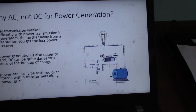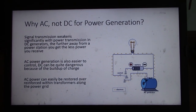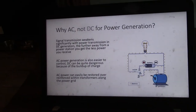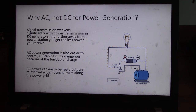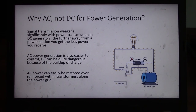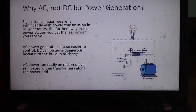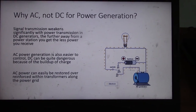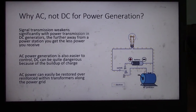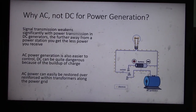Why do we use alternating current for power generation? Signal transmission weakens significantly with DC power transmission. A house 500 kilometers away from a generator would lose far more power than one 50 kilometers away — DC generators significantly lose power the further you move from the source. AC power generation with alternating current allows us to store power throughout the grid so it's not lost. Also, charge can build up with DC generators, and when we turn switches on and off that voltage dissipates in a way that can be really dangerous for end users.